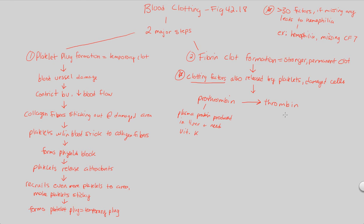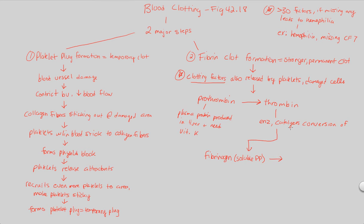Clotting factors cause prothrombin to be converted to its active thrombin form. Thrombin acts as an enzyme and catalyzes the conversion of the next molecule: fibrinogen. Fibrinogen is a soluble plasma protein found freely within the plasma, and it will be converted — due to thrombin's enzymatic action — into what is known as fibrin.